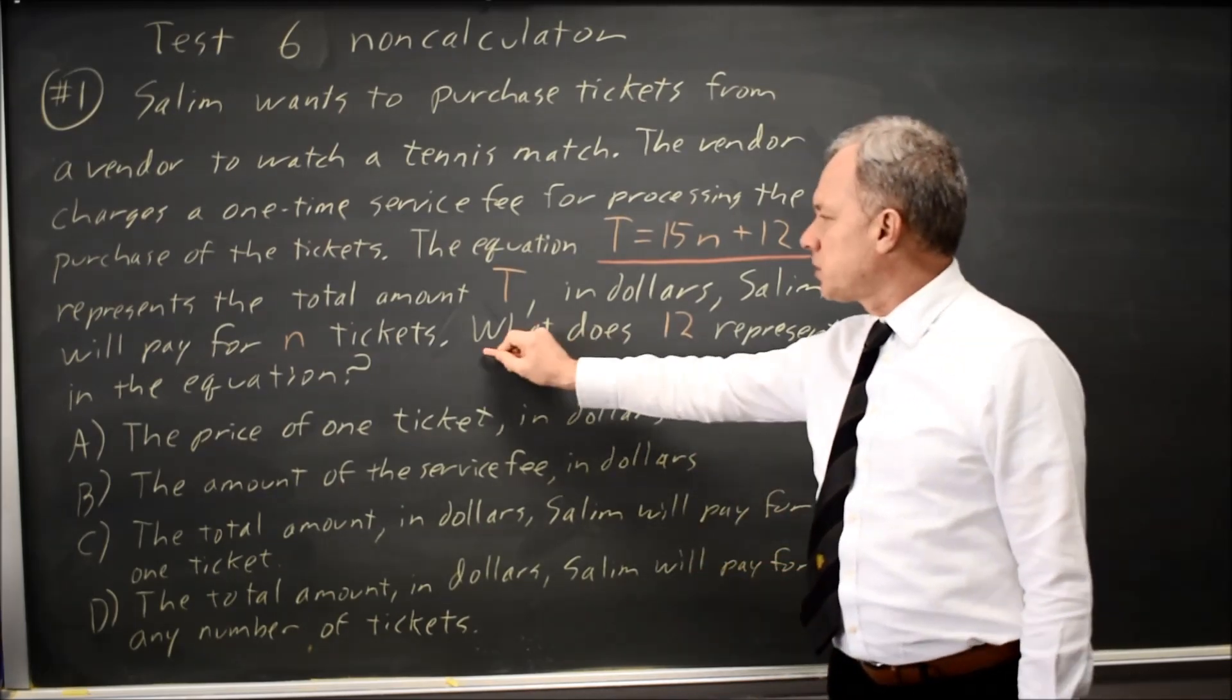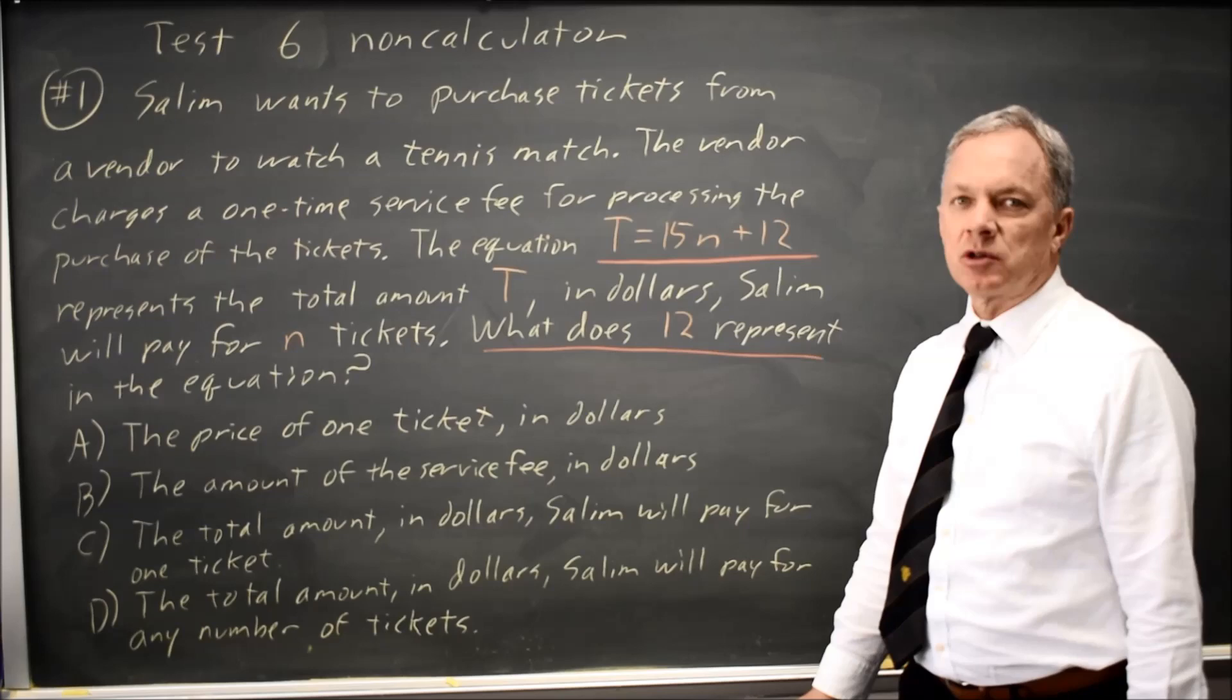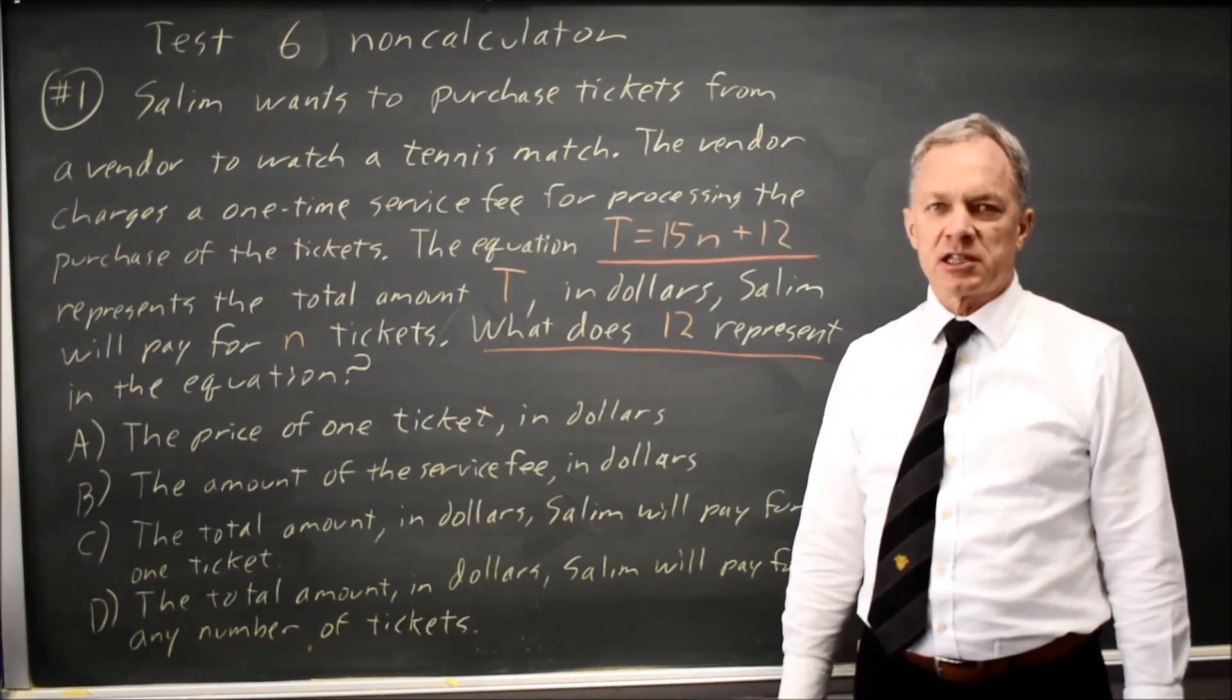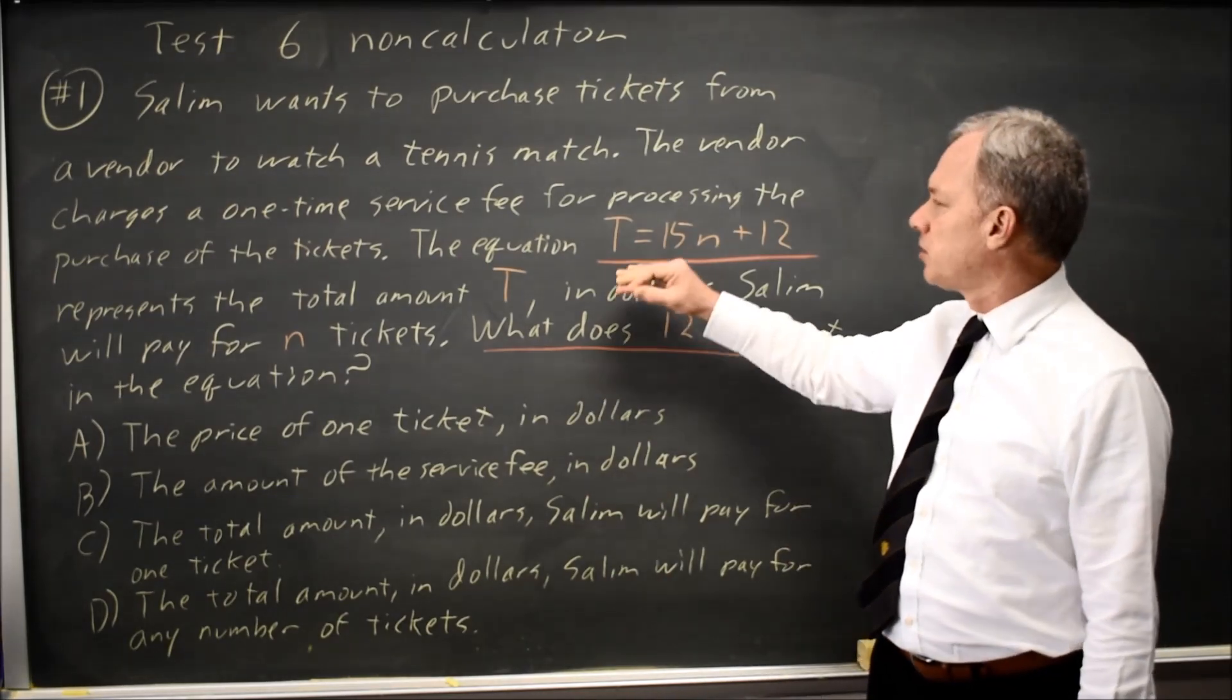And then asks, what does the 12 represent in this equation? College Board will often give you a linear equation in context and then ask for the meaning of either the slope or the intercept.